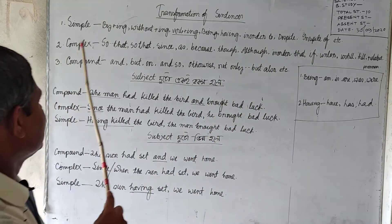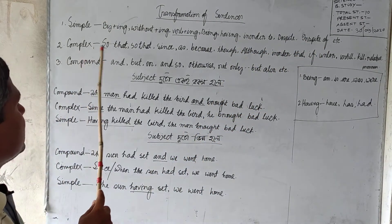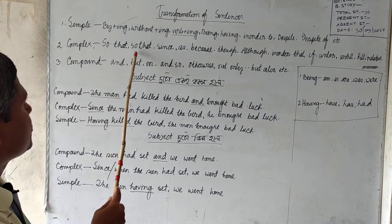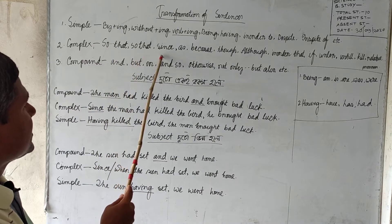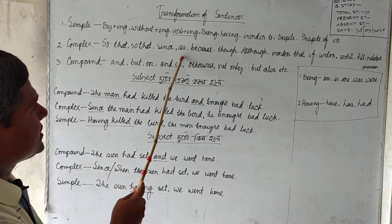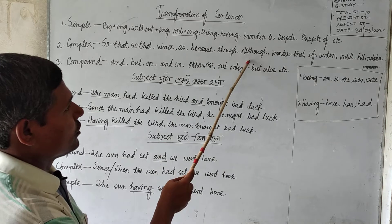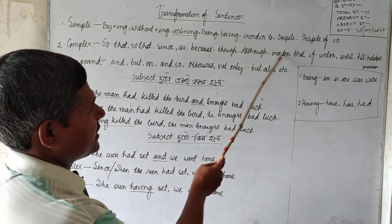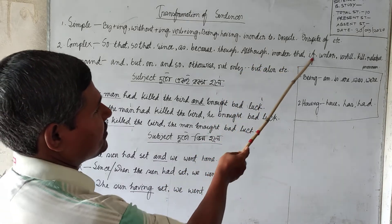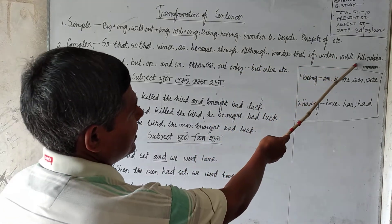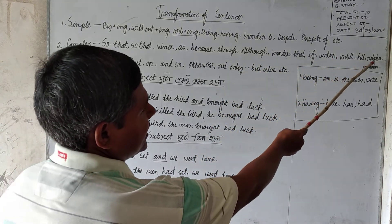Next, complex sentence connectors: so that, since, as, because, though, although, in order that, if, unless, until, till, and relative pronoun.